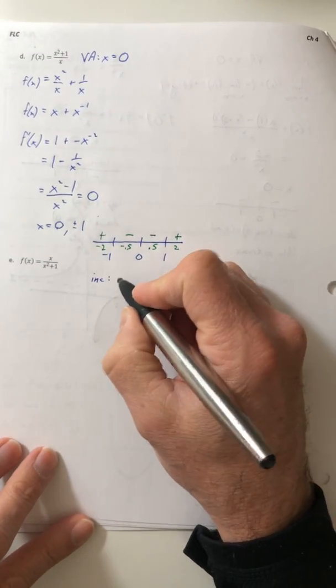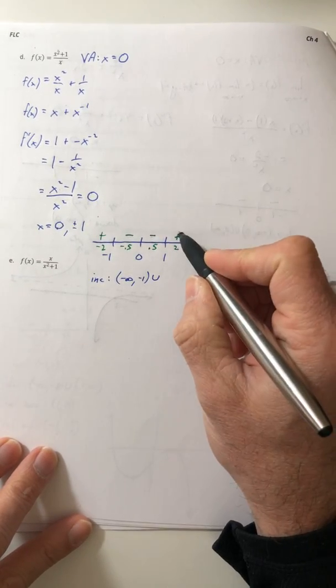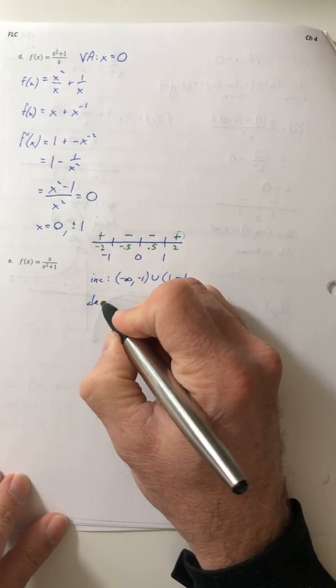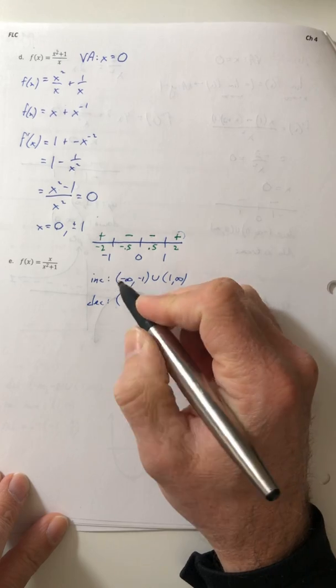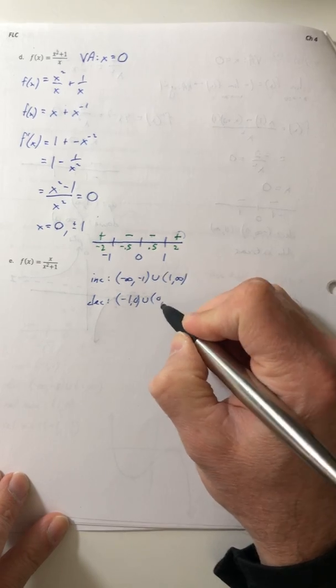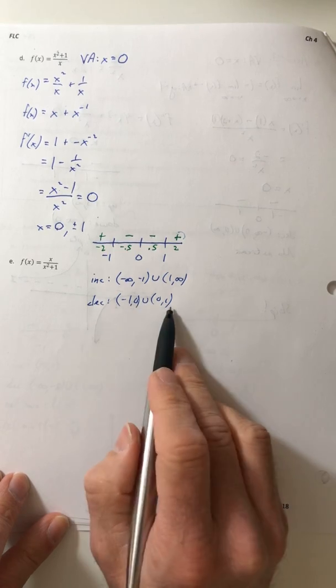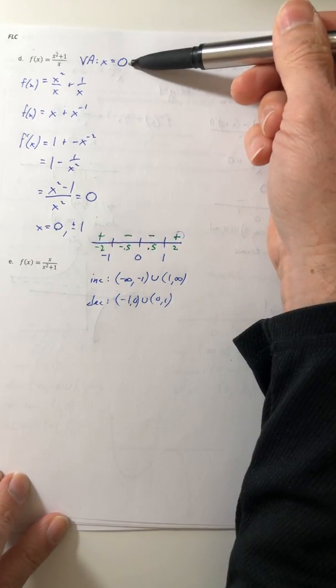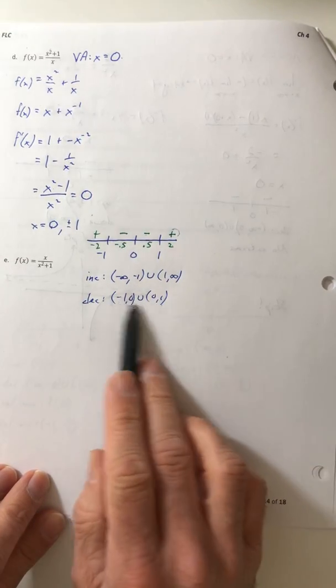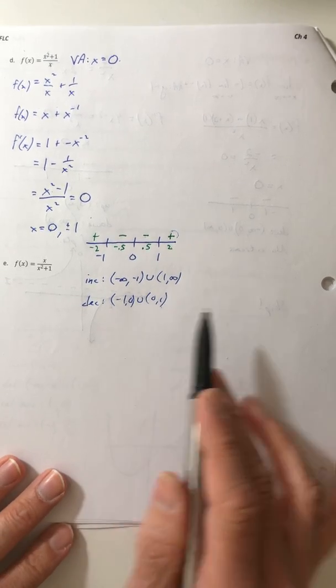So I have intervals of increasing from negative infinity to negative one. And again, from one to infinity. And then it's decreasing from negative one to zero. And then from zero to one. I'm not going to merge this all into one interval. So I'm not going to say negative one to one, because zero isn't, again, not part of my domain. So I got to leave them separated. If it was part of the domain, then yes, I could totally merge them together and say negative one to one. And you should, if it's possible.